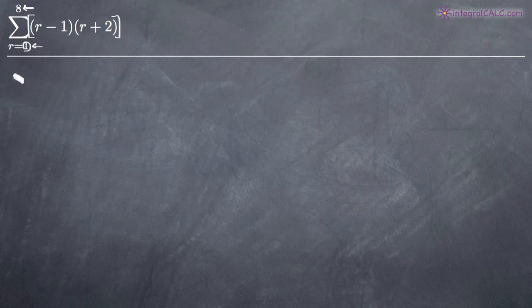So in our problem, we'll do this without being real formal about it. One minus one is going to be zero times one plus two is three. Then we add each time. So now we'll be plugging in two. Two minus one is one, two plus two is four.